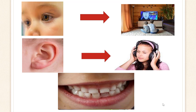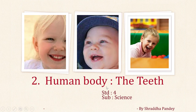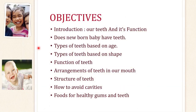It's our teeth which help us to grind and chew our food. In this video, I am going to talk about our teeth — from the second lesson, Human Body, the teeth of 4th standard science, from S-Chan publication textbook of ICSE board. The objectives I am going to cover are: introduction of our teeth and its function, does a newborn baby have teeth, types of teeth based on age, types of teeth based on shape, function of teeth, arrangement of teeth in a mouth, structure of teeth, how to avoid cavities, and foods for healthy gums and teeth.